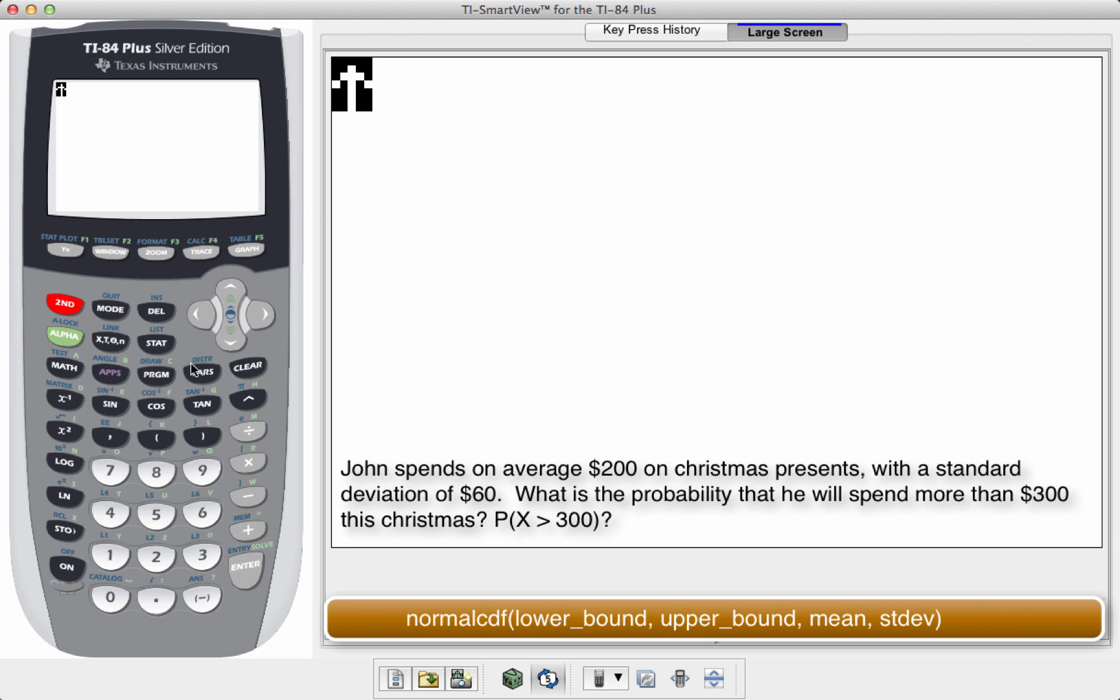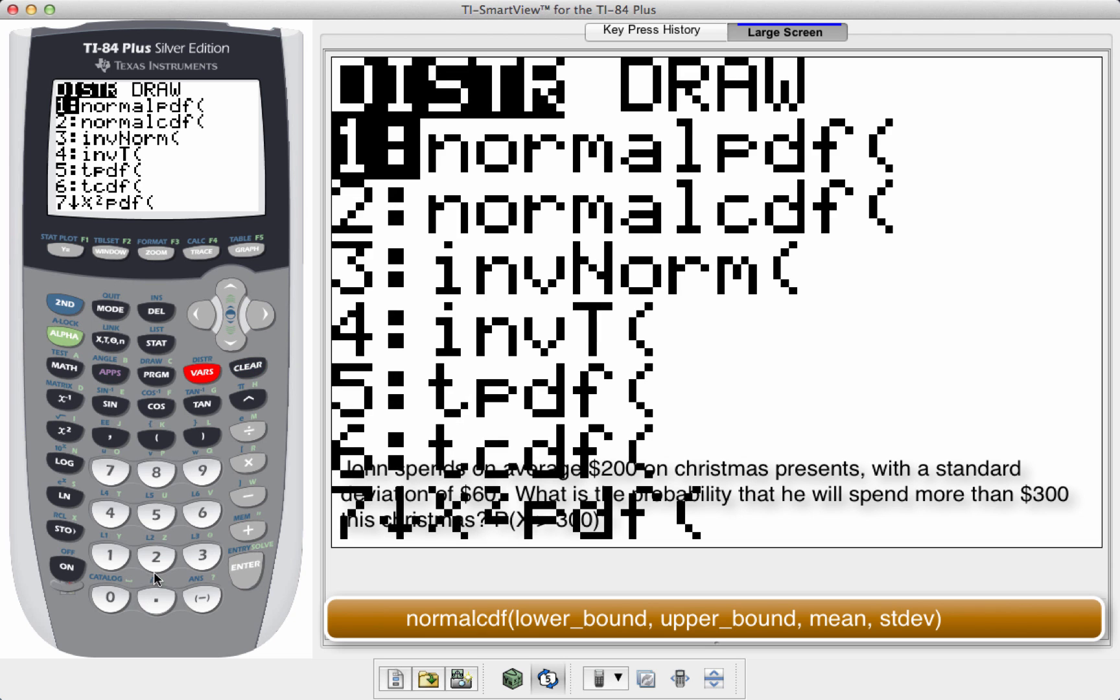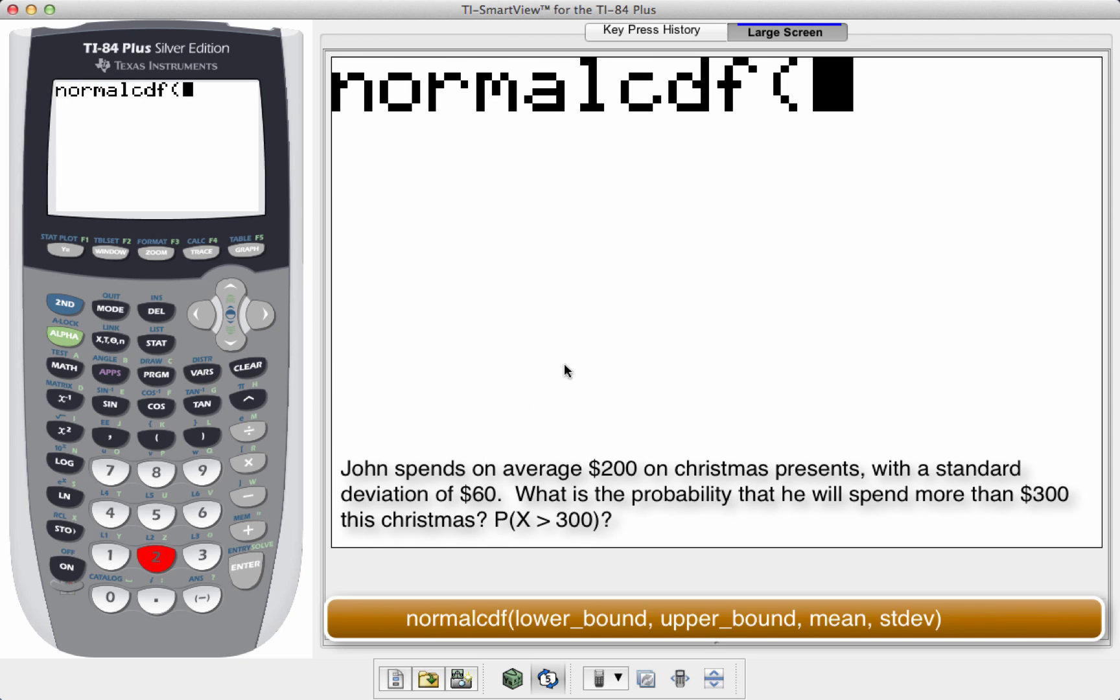Here's how you do it. Second, distribution. Again, choose number two in the list. Now, my lower bound is I want to test the probability of greater than 300. So my lower bound in this case is the number 300.